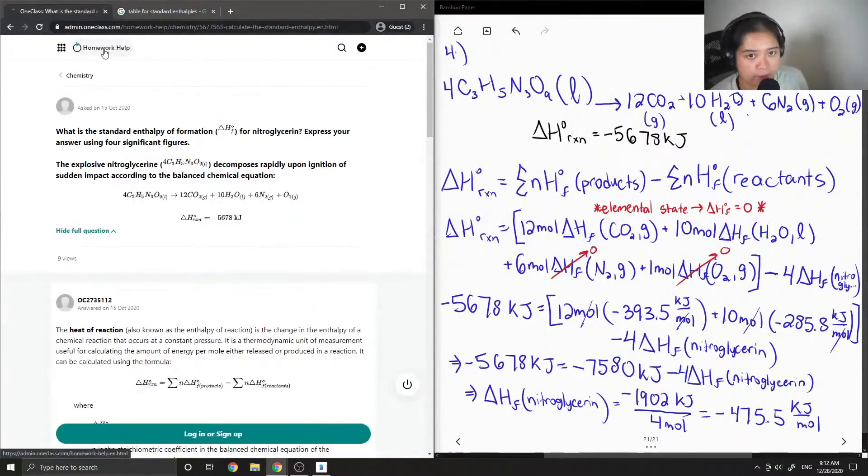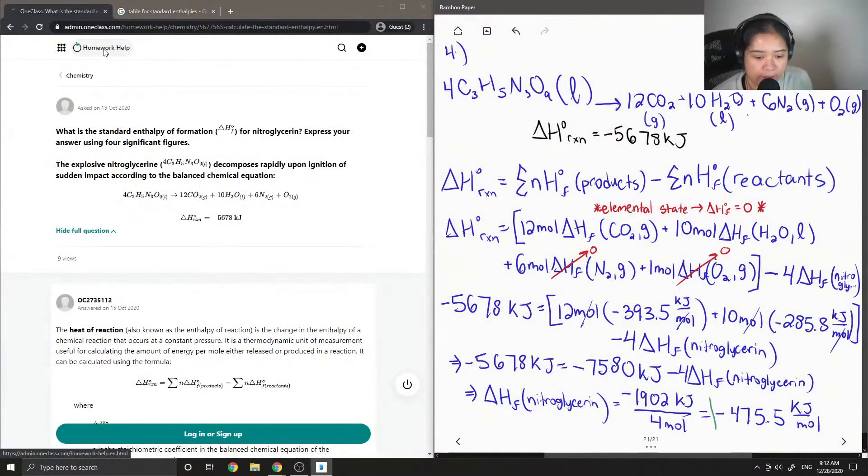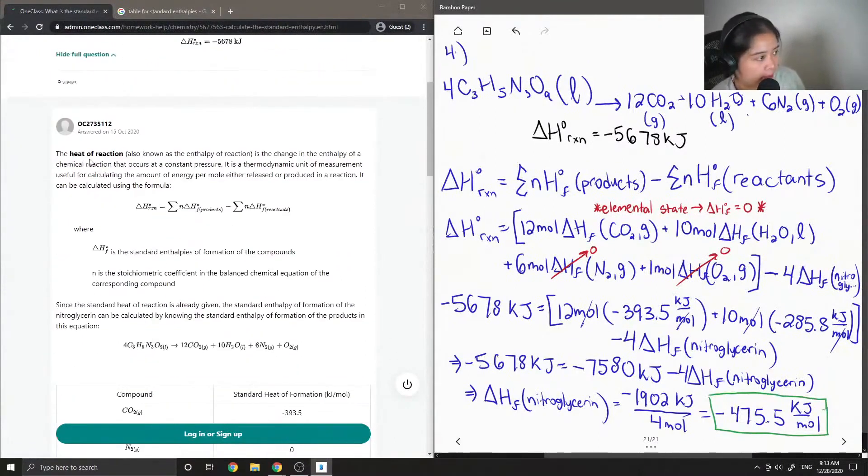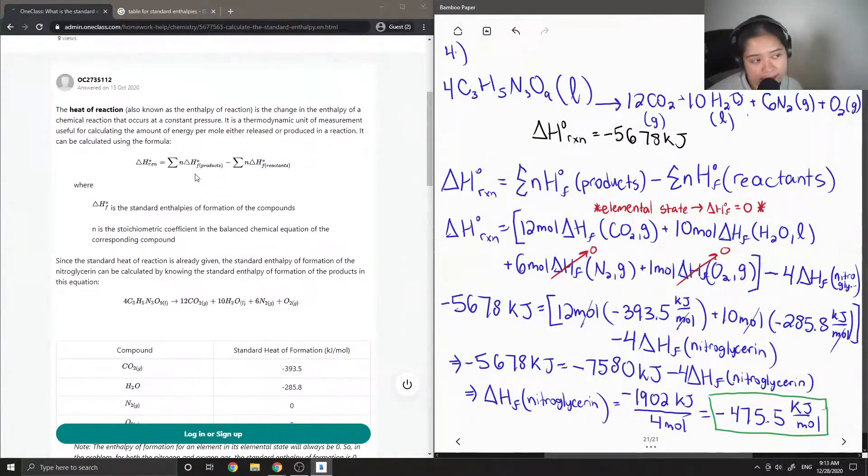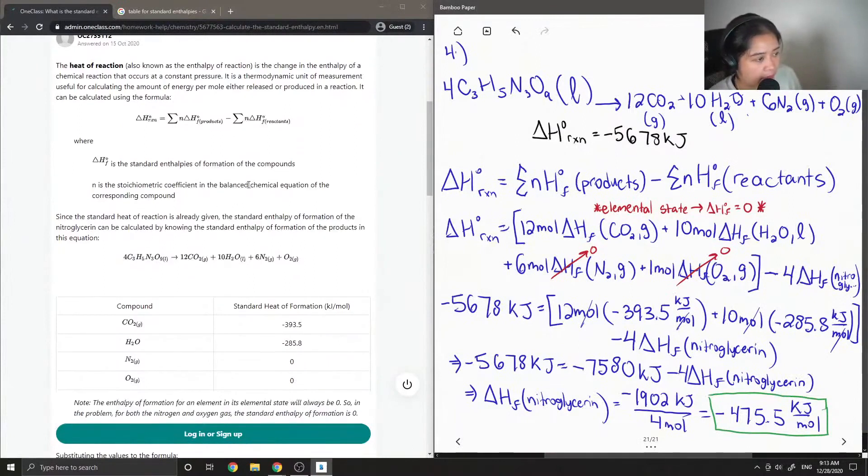Okay, so let's see what the tutor said. And I'll box in my final answer because it looks pretty overwhelming. So the heat of reaction, also known as the enthalpy of reaction, is the change in the enthalpy of a chemical reaction that occurs at a constant pressure. So it is a thermodynamic unit of measurement useful for calculating the amount of energy per mole either released or produced in a reaction. It can be calculated using the formula delta H of reaction equals the sum of N times the delta H of formation of our products minus the sum of N times the delta H of our reactants.